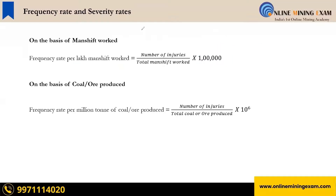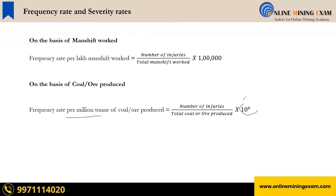It is 10 to the power five, not 10 to the power six, because it is per lakh man-shift work, and one lakh is 10^5. For per million ton of coal produced, the number is 10 to the power six. So don't confuse between 10^5 and 10^6: if it is per lakh, then 10^5; if it is per million, then 10^6.